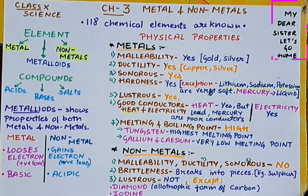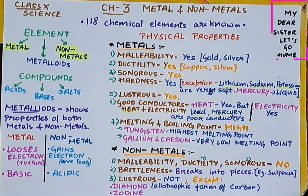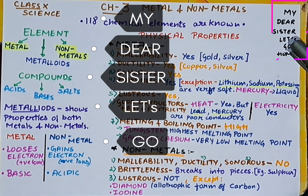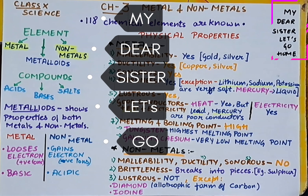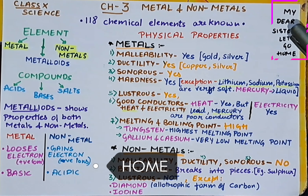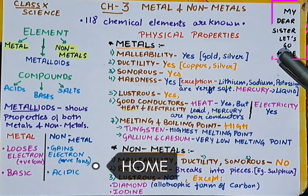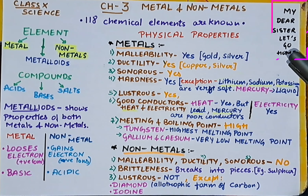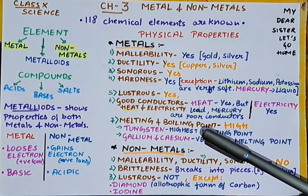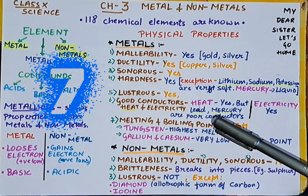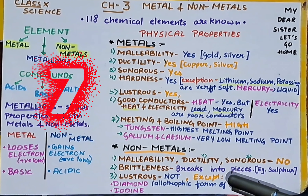To remember the physical properties of metals, there is a small trick: 'My Dear Sister Let's Go Home' — M for malleability, D for ductility, S for sonorous, L for lustrous, G for good conductors of heat and electricity, H for hardness, and M for melting and boiling point — seven properties in total.